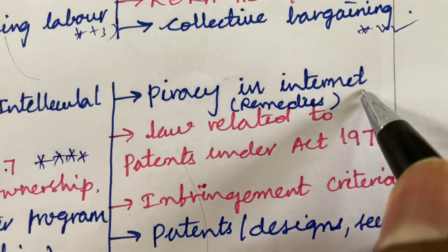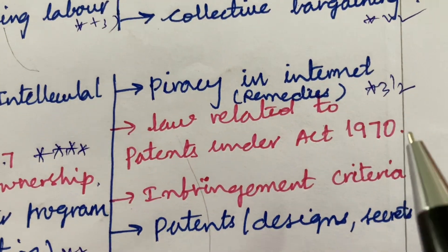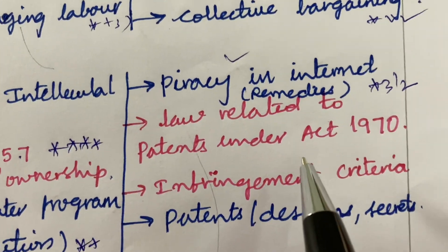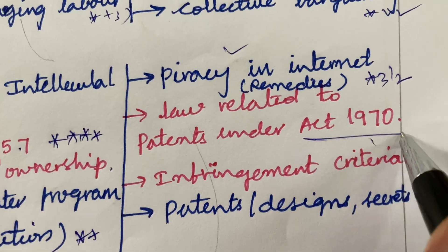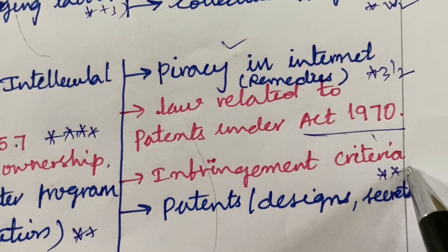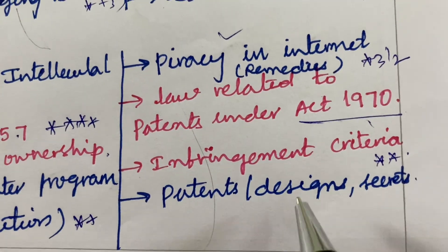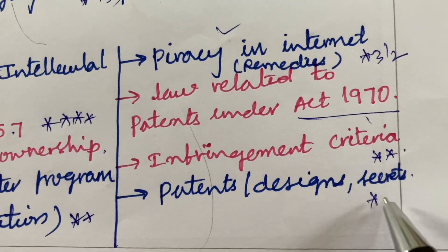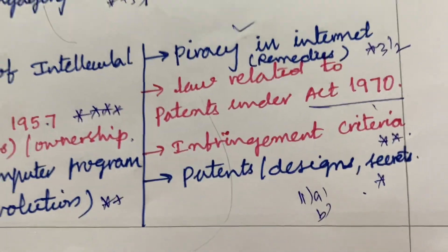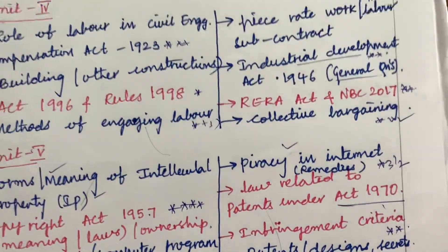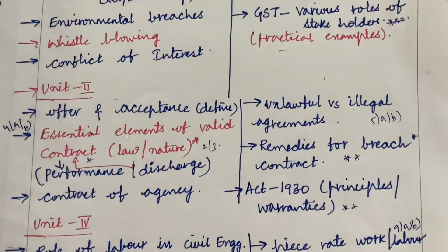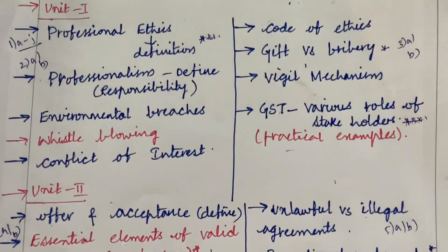Piracy on the internet is a 3-mark or 2-mark question, and remedies are also important. Laws related to patents under 1970 as well as infringement criteria is a 3-mark or 2-mark question. Patent designs and secrets is one of the top most questions, asked in 11A and 11B. Do not expect a direct 10-mark question — it is usually a combination of 5 plus 5, and sometimes if it is lengthy, you will get it for 10 marks.